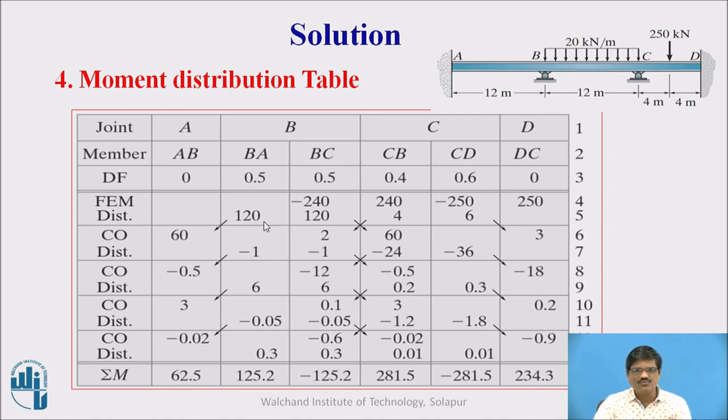Then after this we shall go for the distribution. For that we have to balance the joints first. For example if I look at joint B here, the BC and BA, it is not balanced. So there is unbalanced moment of plus 240. So that plus 240 is to be distributed here based on the distribution factor 0.5, 0.5. So 120 transfers here, 120 transfers here.